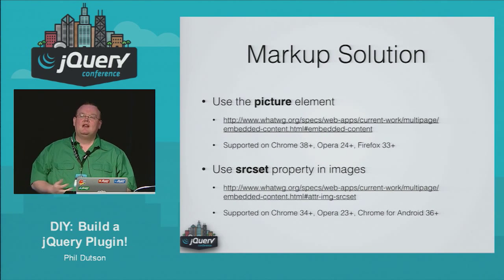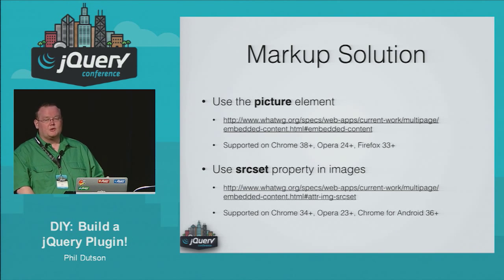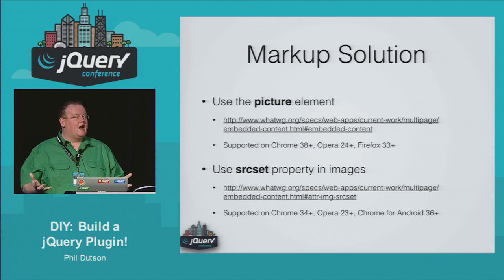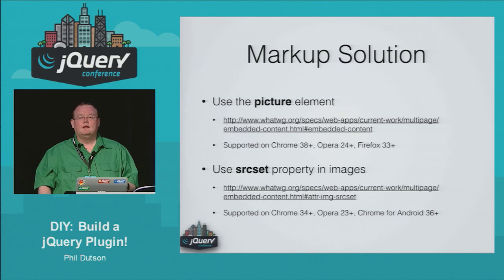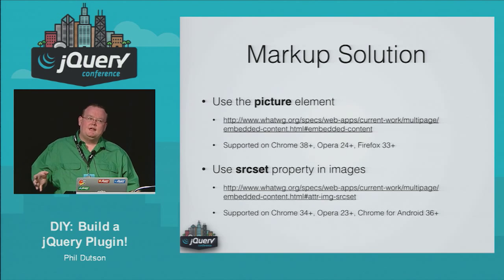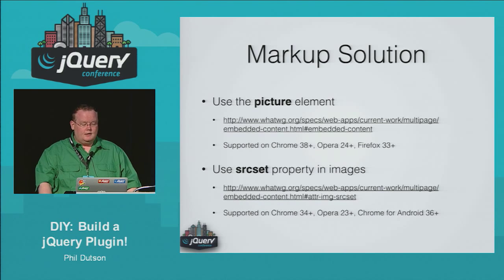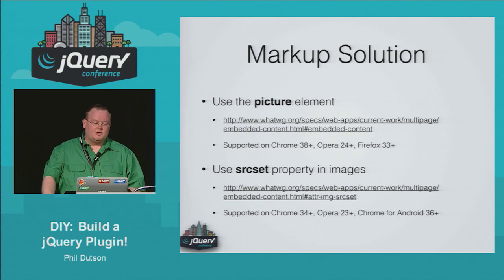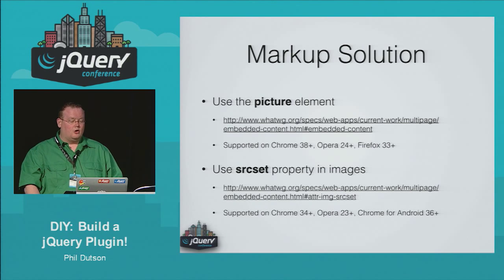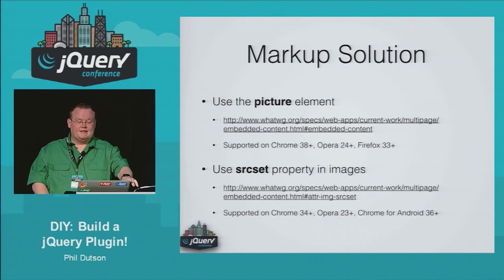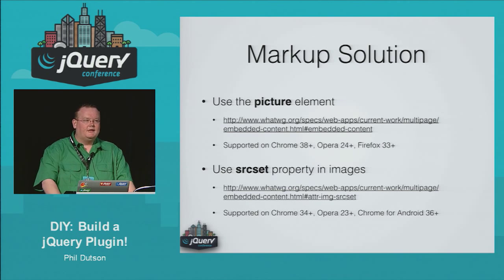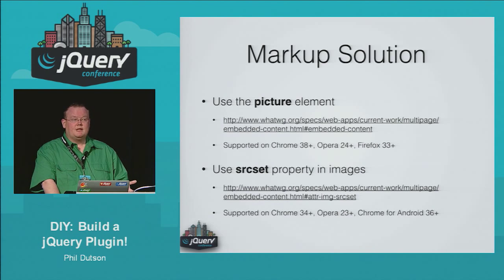Talking about the markup solution — hopefully by now some of you have heard of srcset and the picture element. This was kind of big news because it alleviates a lot of the problem with responsive images. Both of these solutions were funded and added to Chrome and Firefox. The only downside is the support: Chrome 38+, Opera 24+, Firefox 33+ for picture; and Chrome 34+, Opera 23+, Android 36+ for srcset. There are some differences — I'd love to go into them but it would probably take another hour — so go ahead and check those out.